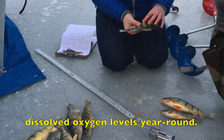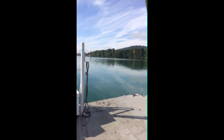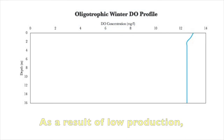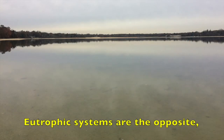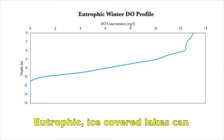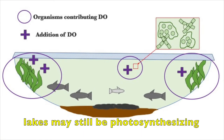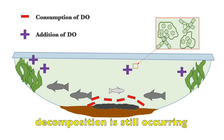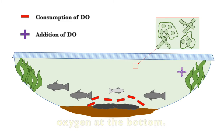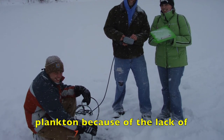It is important to monitor dissolved oxygen levels year-round. Trophic status can affect the DO distribution throughout the water column. Oligotrophic systems have low levels of productivity, or algae and plant growth, and low amounts of nutrients in the water. The water often has a blue color. As a result of low production, oxygen is rarely depleted in the winter. Eutrophic systems are the opposite and have high levels of productivity and high nutrient concentrations; the water may be greenish in color. Eutrophic ice-covered lakes can develop winter stratification of dissolved oxygen. While the excessive amount of macrophytes and phytoplankton found in eutrophic lakes may still be photosynthesizing during the ice-covered months, decomposition is still occurring at the lake's bottom. As organic matter decomposes, it can use up most, if not all, of the oxygen at the bottom. Ice-covered lakes do not allow mixing to occur from wind, and snowpack may halt photosynthesis of plants and plankton because of the lack of sunlight penetration.